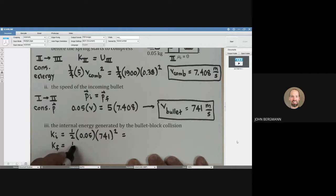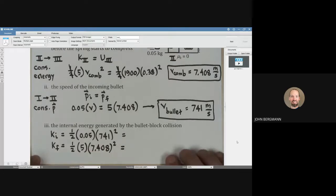The final kinetic energy is going to be one half. The combined mass is five kilograms, and it is moving with a speed of 7.408 meters per second. We need to square all that, again, with the help of a calculator.